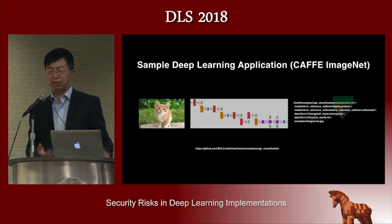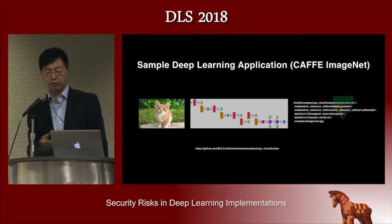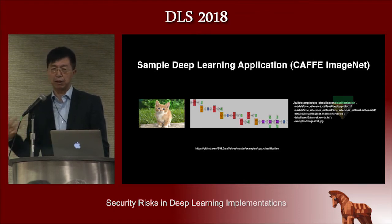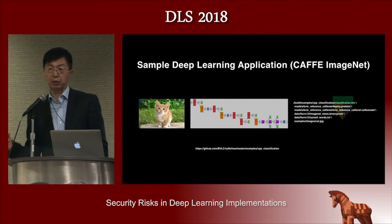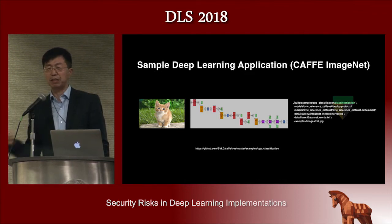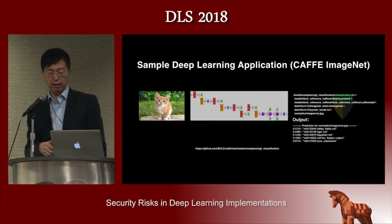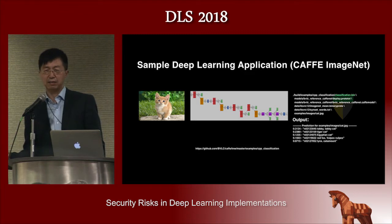Of course, we don't have the code and implementation of those systems, so the first thing we looked at was sample applications you can just download with popular deep learning frameworks. The example I use here is the Caffe example — you can download Caffe and they have a sample implementation. You can even get the ImageNet data and a well-trained model. You put an image into it and you don't even need to train; you can just use other people's model. We downloaded the model from Berkeley's lab, ran it, and if you give it an image like this, it will tell you what kind of cat it is.